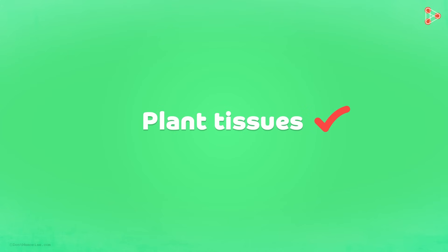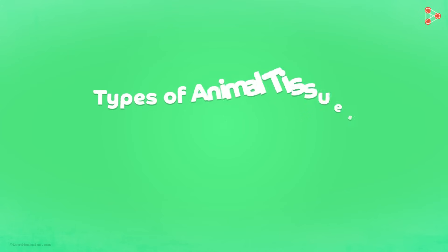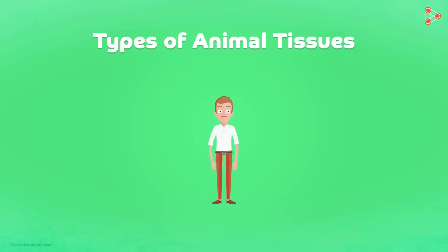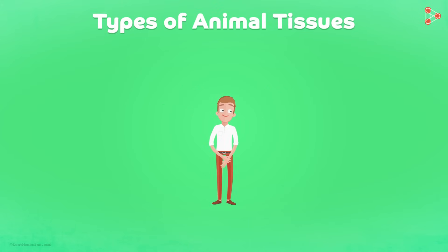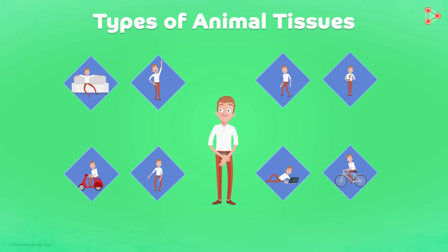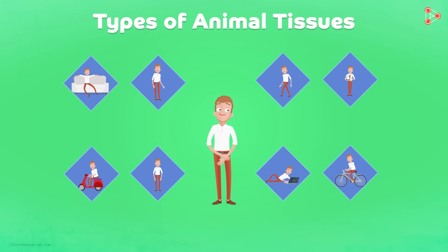After learning about plant tissues, let us take a look at the various types of animal tissues in detail. In the case of animals, where the body is expected to perform uncountable functions simultaneously, it is obvious that the number of tissues will also be innumerable.